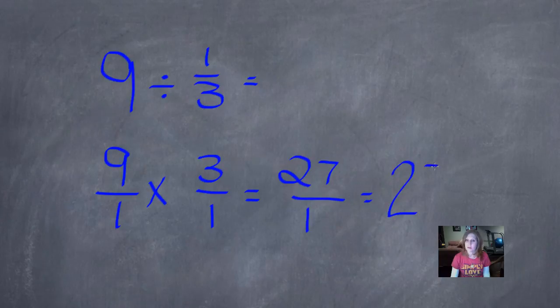If I took nine shapes and divided each of them into three parts, I would have nine times three is 27.